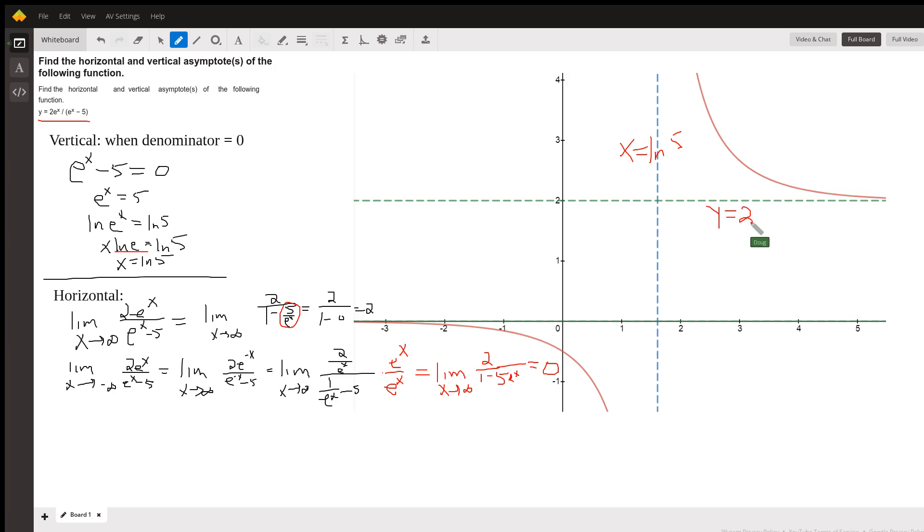Now when x is approaching negative infinity, one technique to make it easier to see what's happening is to replace that negative infinity with positive infinity and replace each of the x's with the opposite of x, which is what I've done here.